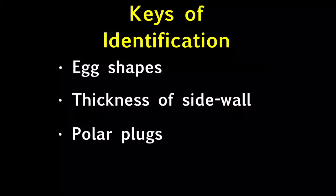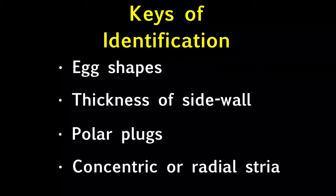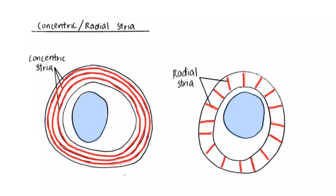Fourthly, we can also look out for stria on the shells of eggs, which are stripe-like and can be either concentric or radial. Concentric stria generally look like circular layers surrounding the egg, while radial stria look like layers that radiate outwards from the egg.